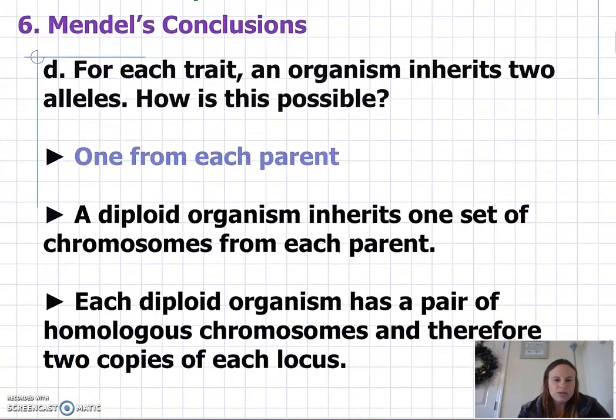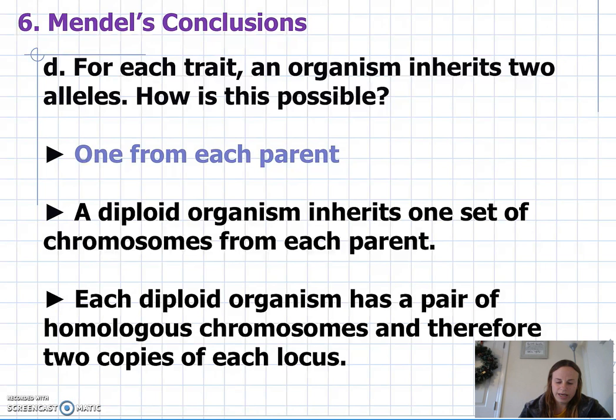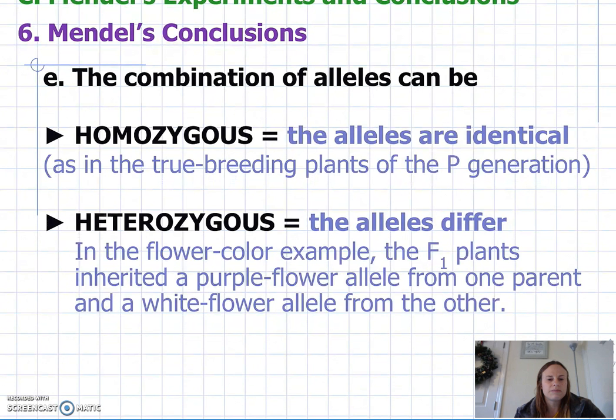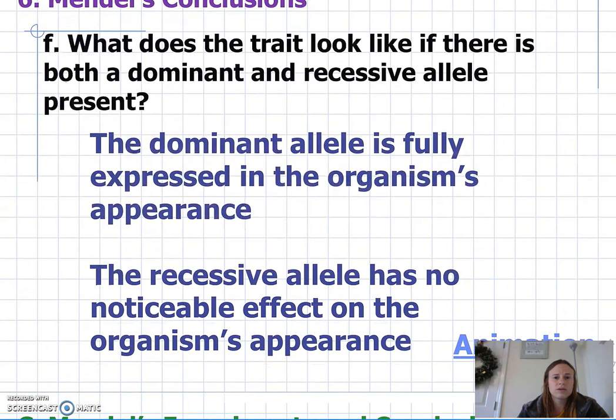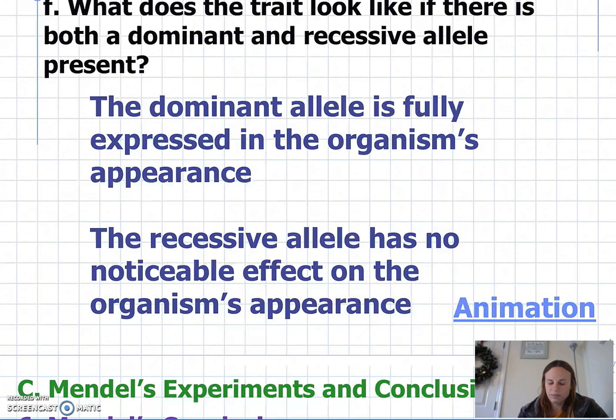Mendel also concluded that an organism gets two alleles — one from mom and one from dad. The combination of alleles can be either homozygous or heterozygous. A homozygous combination means you have identical alleles, while a heterozygous combination means you have different alleles. When there's both a dominant and recessive allele, the trait that's expressed in the organism's appearance is the dominant allele, where the recessive allele has no noticeable effect on that organism's appearance.